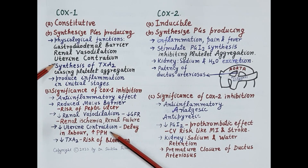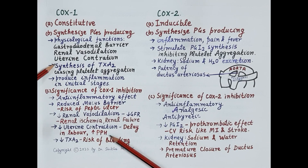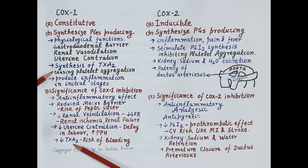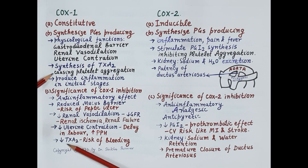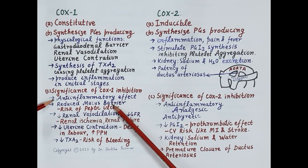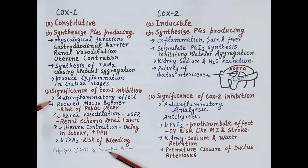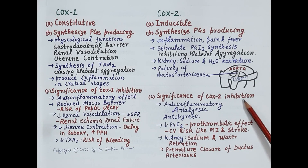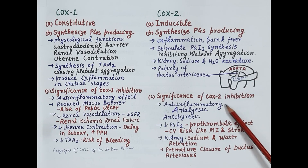Blockage of COX-1 also reduces uterine contraction; a fall in uterine contraction delays labor and increases the risk of postpartum hemorrhage. Another important side effect: blockage of COX-1 causes reduced synthesis of thromboxane A2, and this causes a risk of bleeding. So COX-1 inhibition produces anti-inflammatory effect but is associated with a number of significant side effects.